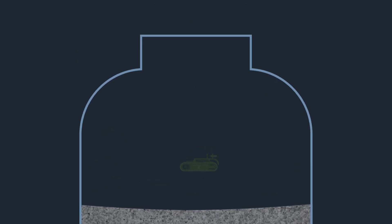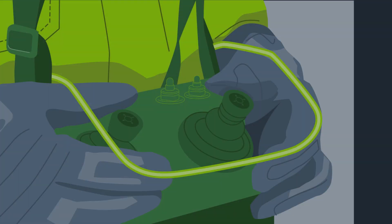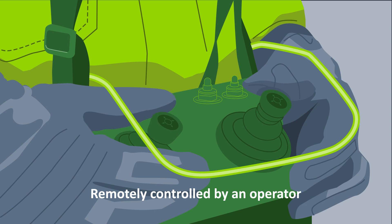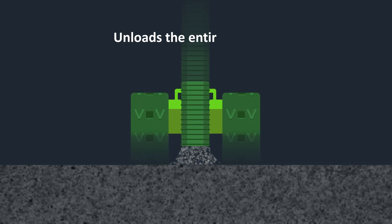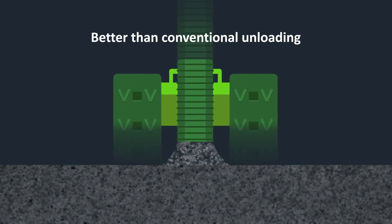Purposely built to fit through most standard manways, Rover gets lowered into a reactor through its top access point. Remotely controlled by an operator, the sturdy track design and guy wires allow it to move freely within the reactor as it unloads essentially the entire contents at rates comparable to or better than conventional unloading.